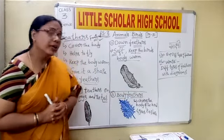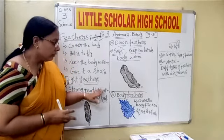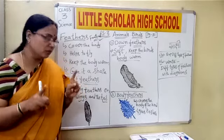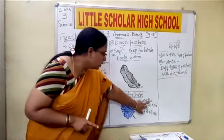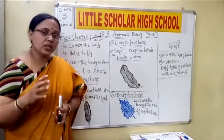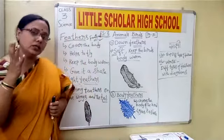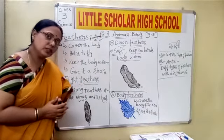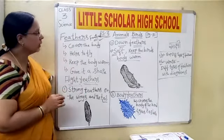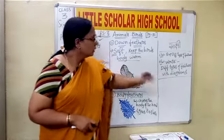The third type is body feathers. From the name itself, you can understand that these are the feathers present on the entire body of the bird. Body feathers cover the body of the bird and give it its shape. Because of the arrangement of the body feathers, we are able to see the different kinds of shapes that birds have.